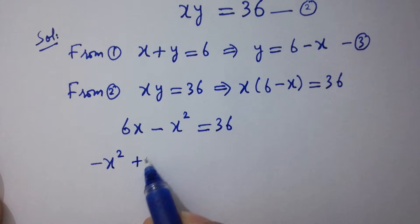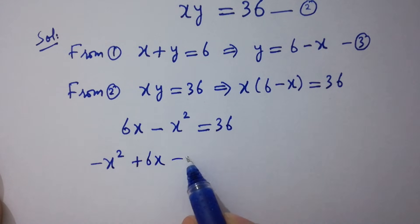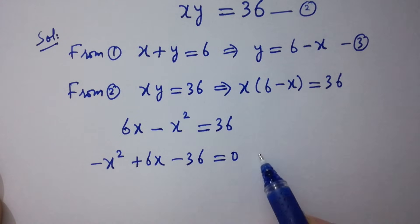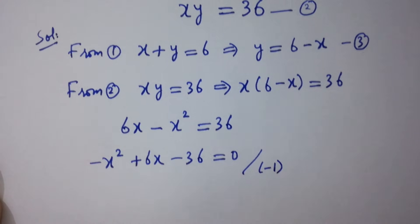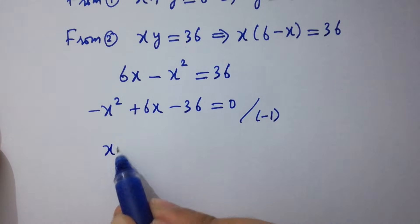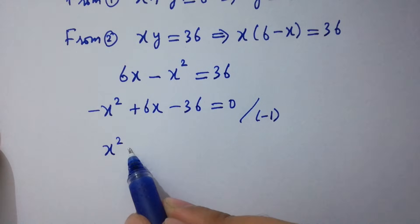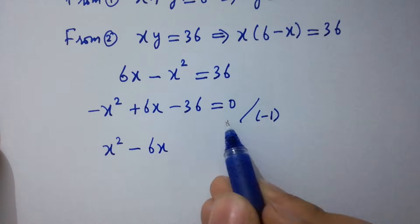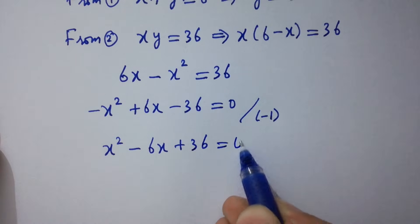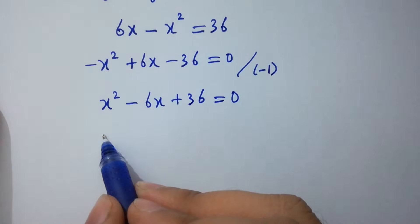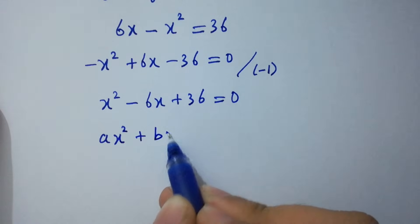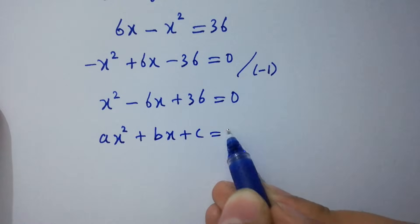Rearranging: negative x squared plus 6x minus 36 equals 0. Dividing both sides by minus 1, we get x squared minus 6x plus 36 equals 0, which is a quadratic equation of the form x squared plus bx plus c equals 0.